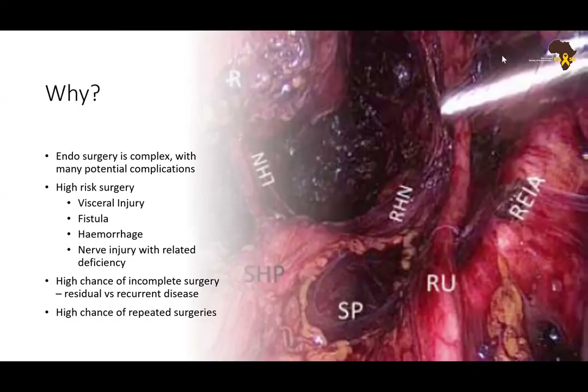Why? Because if we decide to go in for surgery, this surgery is complex and comes with many potential complications — including a very high risk for visceral injury, fistula formation, hemorrhage, and nerve injury with related deficiencies. Therefore there is a high chance of incomplete surgery if you are not aware of your anatomy, leading to residual disease, recurrent disease, and therefore repeated surgeries. Without anatomy, proceeding with endometriosis surgery would be close to impossible.